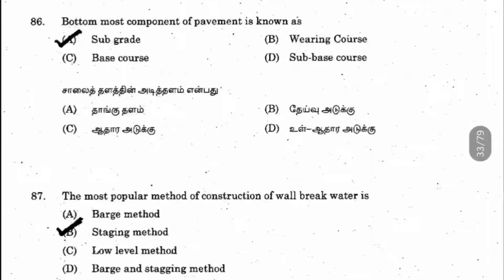Question 87: The most popular method of construction of wall breakwater is what? The answer is the staging method. Wall breakwater is a vertical wall-like structure constructed along coastlines to prevent water intrusion. The staging method is the most preferable method for this construction.